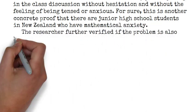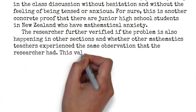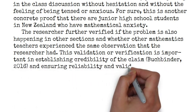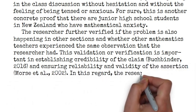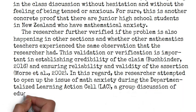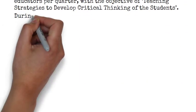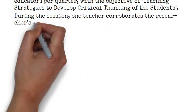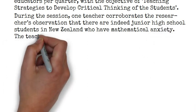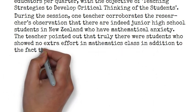The researcher further verified if the problem is also happening in other sections and whether other mathematics teachers experienced the same observation that the researcher had. This validation or verification is important in establishing credibility of the claim and ensuring reliability and validity of the assertion. In this regard, the researcher attempted to open up the issue of math anxiety during the departmentalized learning action cell, a group discussion of educators per quarter with the objective of teaching strategies to develop critical thinking of students. During the session, one teacher corroborated the researcher's observation that there are indeed junior high school students in New Zealand who have mathematical anxiety. The teacher pointed out that truly, there were students who showed no extra effort in mathematics class, in addition to the fact that some students really avoided the subject.